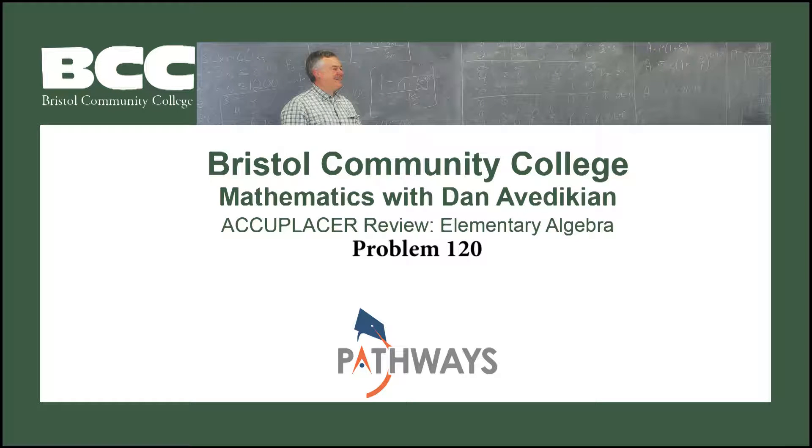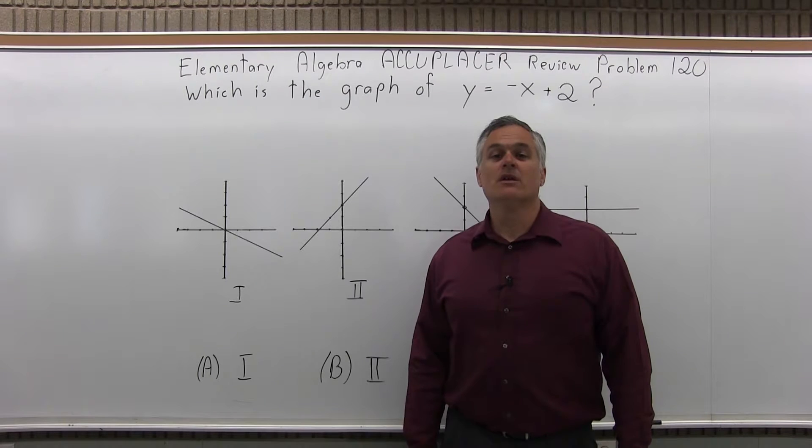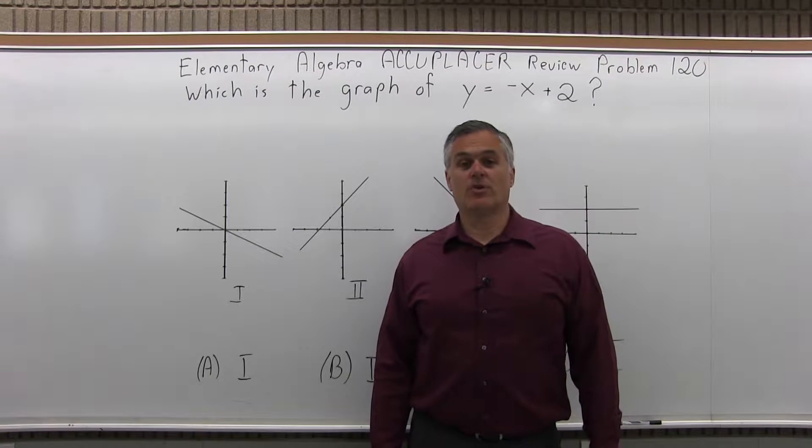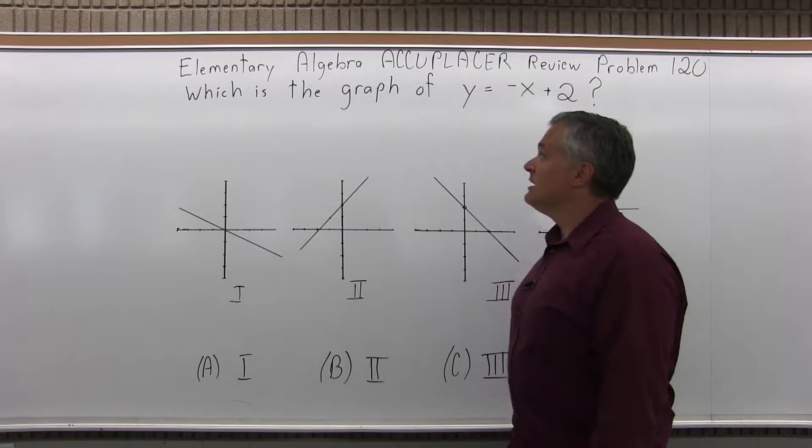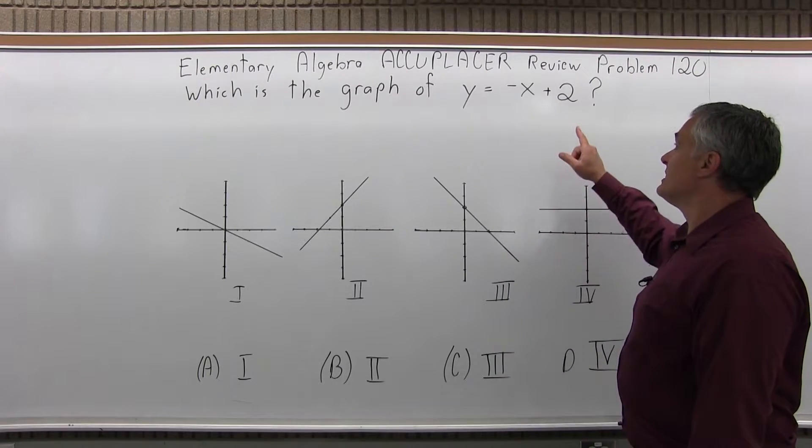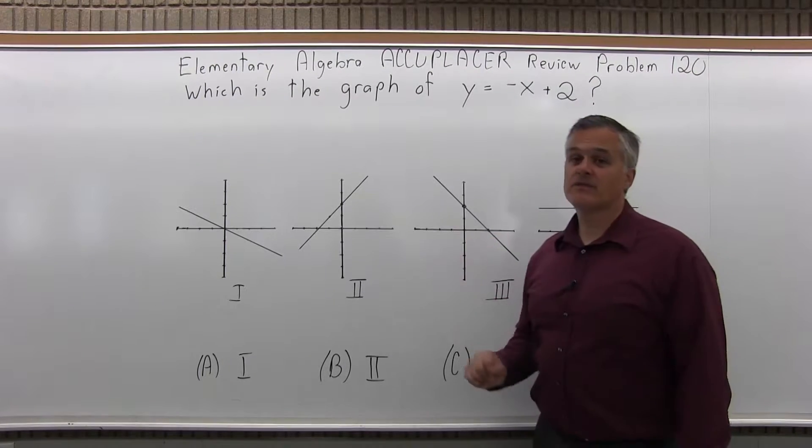Bristol Community College, Mathematics with Dan Avadikian, Accuplacer Review, Elementary Algebra, Problem 120. This is the Elementary Algebra Accuplacer Review, Problem 120. It says which is the graph of y equals negative x plus 2, and there's four graphs to choose from.